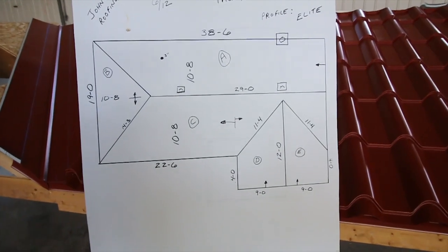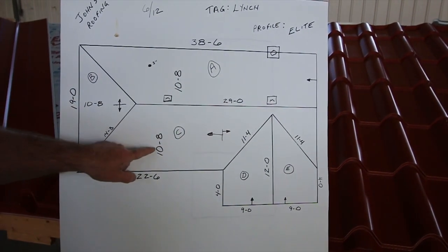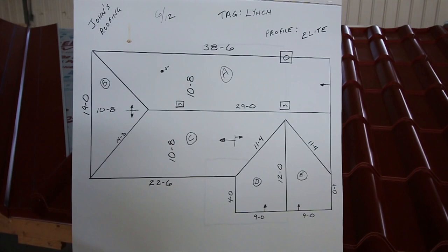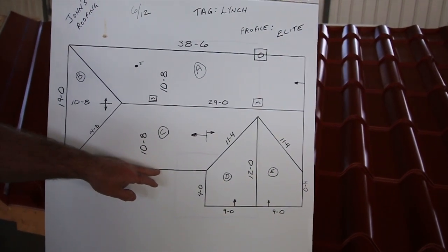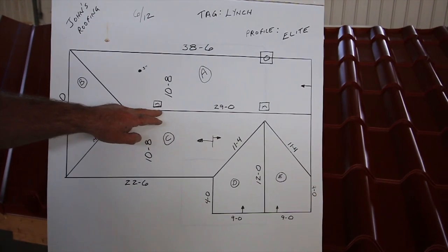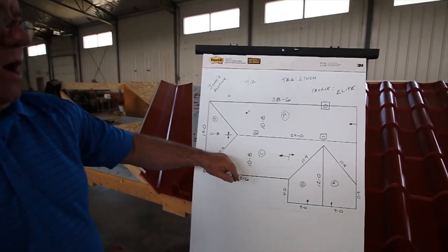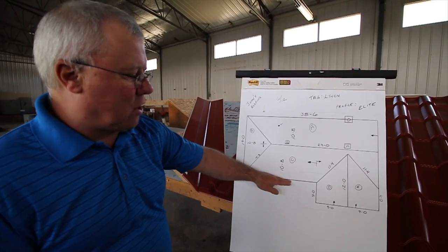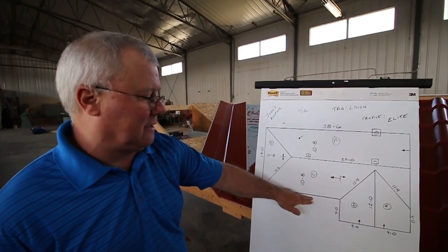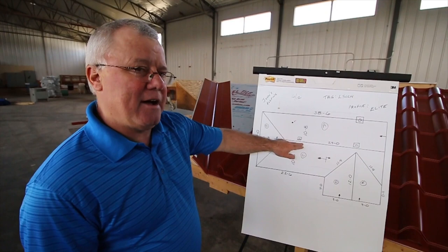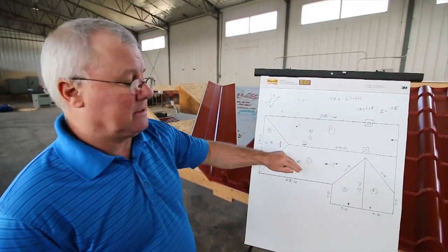You'll see here: bottom of the eaves to the ridge cap, ten foot eight is the panel length. The way you want to take your measurement is to hook your tape at the bottom and go to the very center at the peak — that's the panel length you want. By the time you drop that panel down for a three-quarter inch overhang at the bottom, you're going to have the right spacing you need at the ridge cap for your panels to vent.